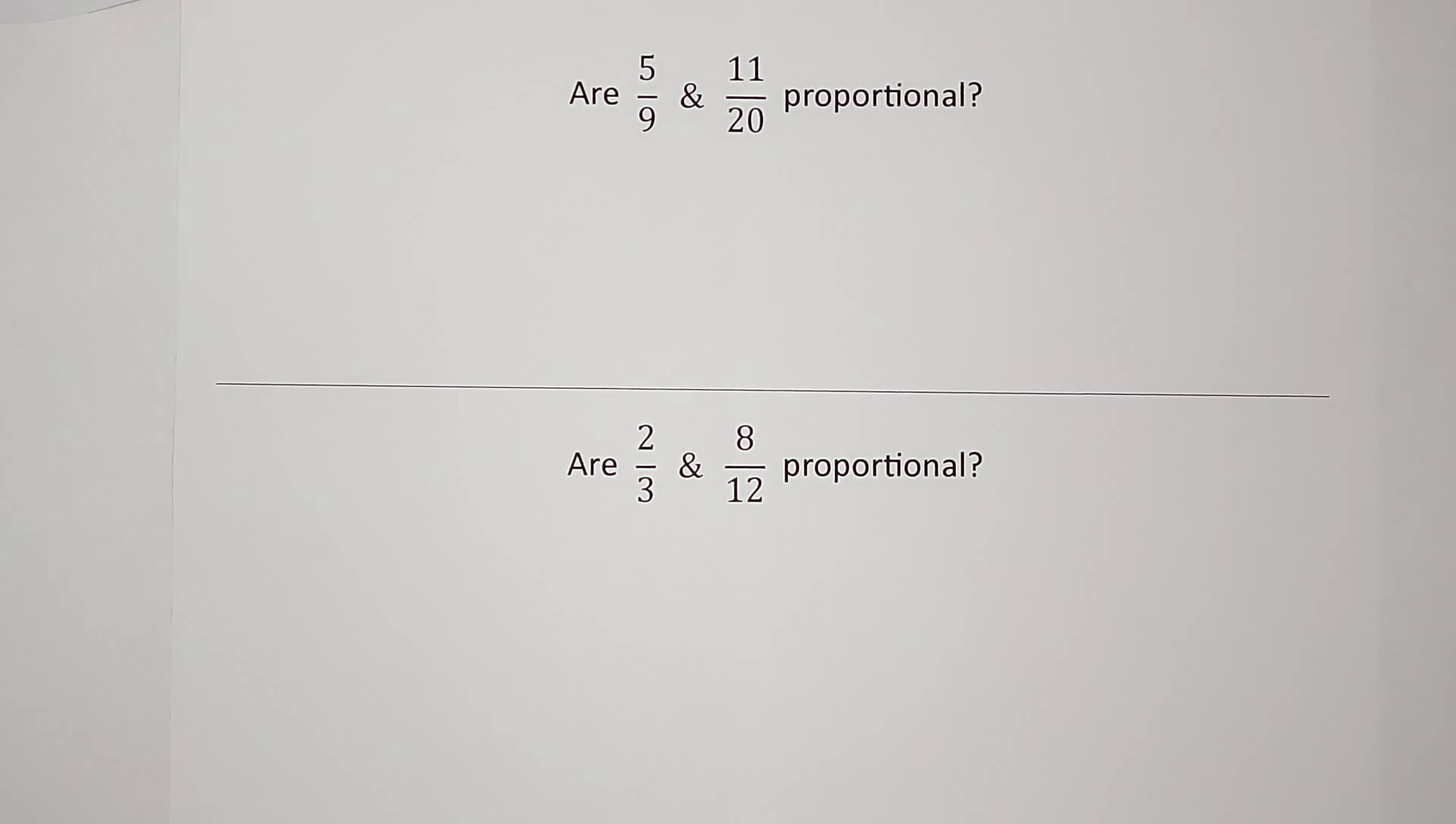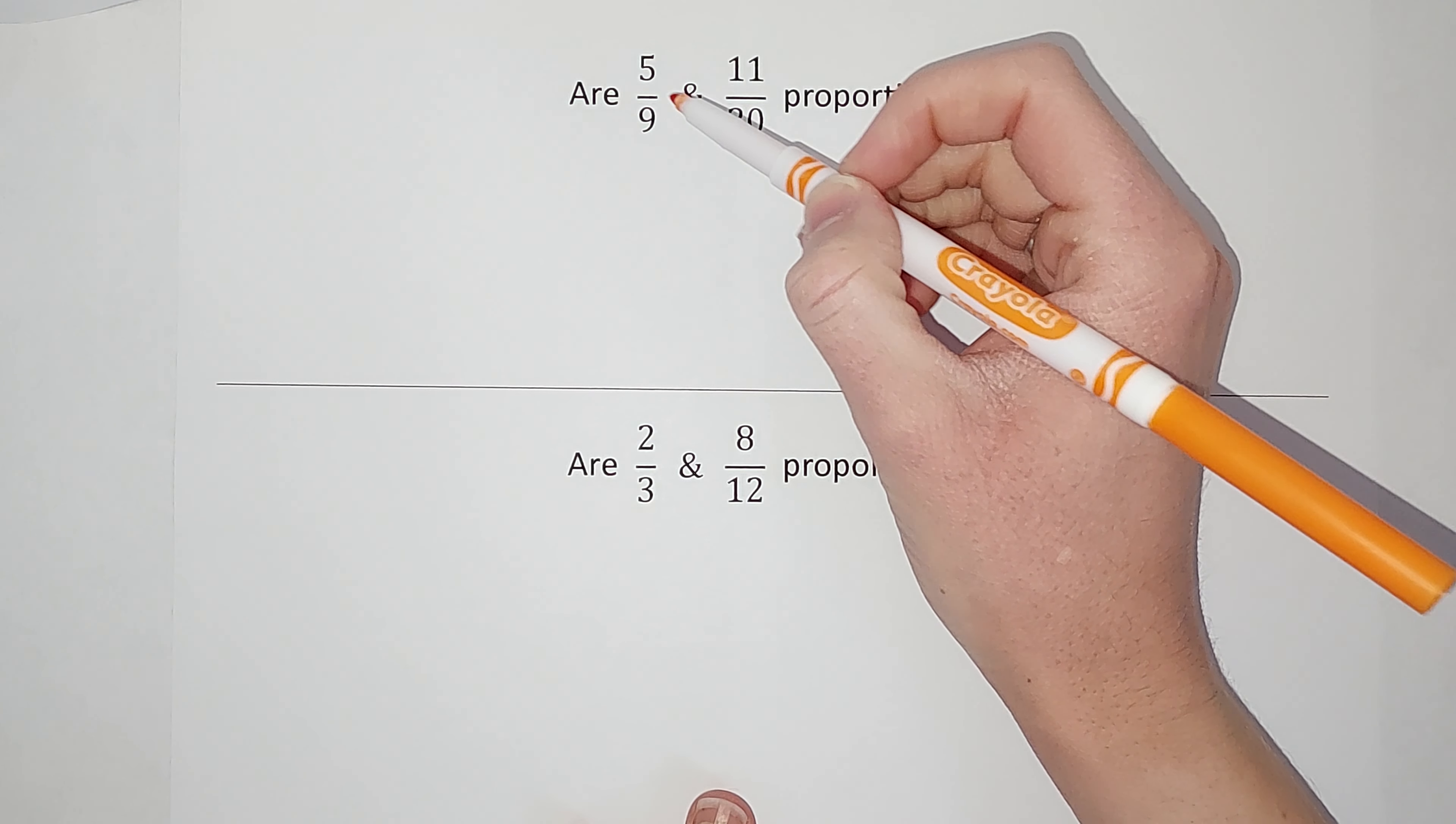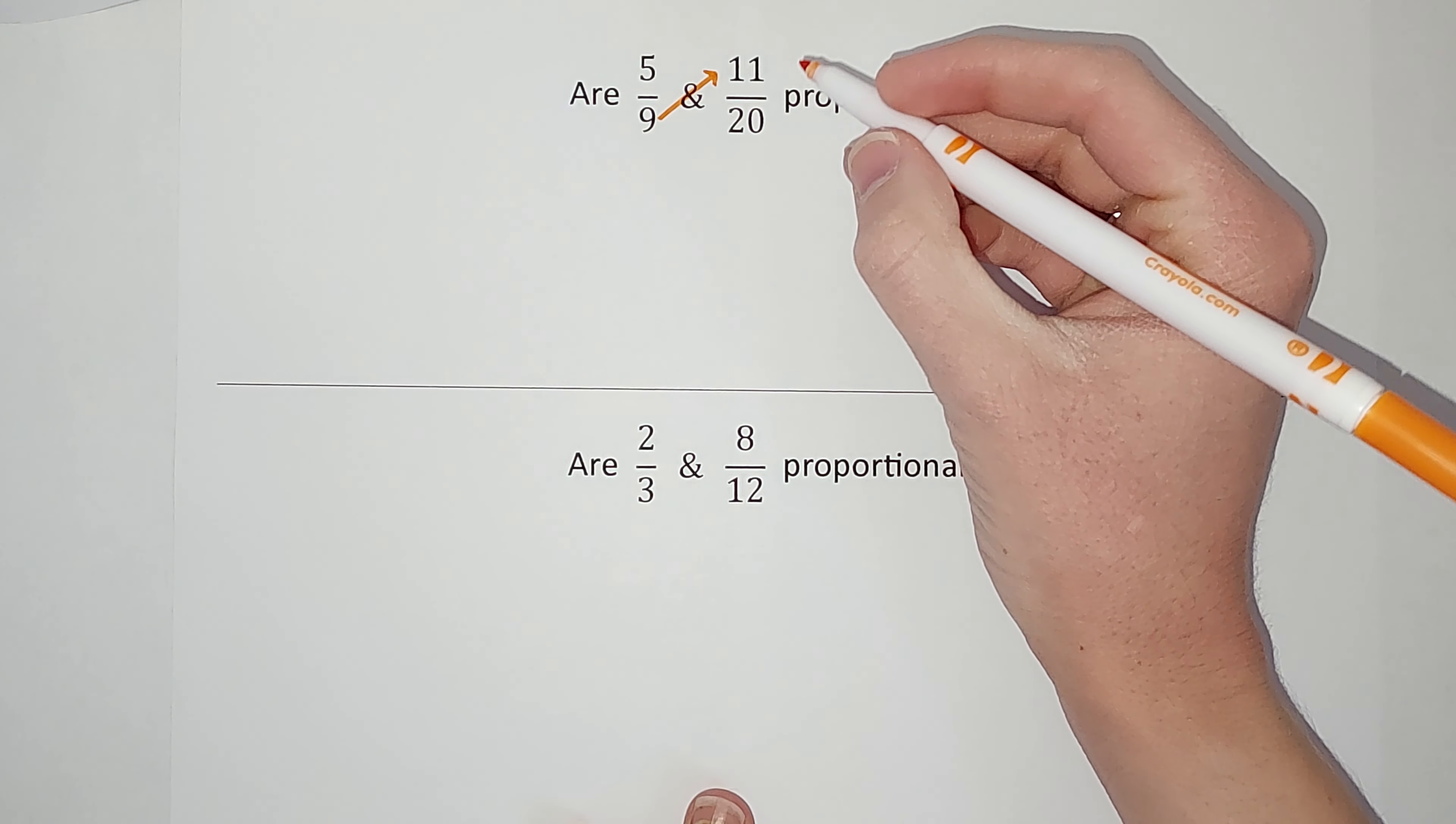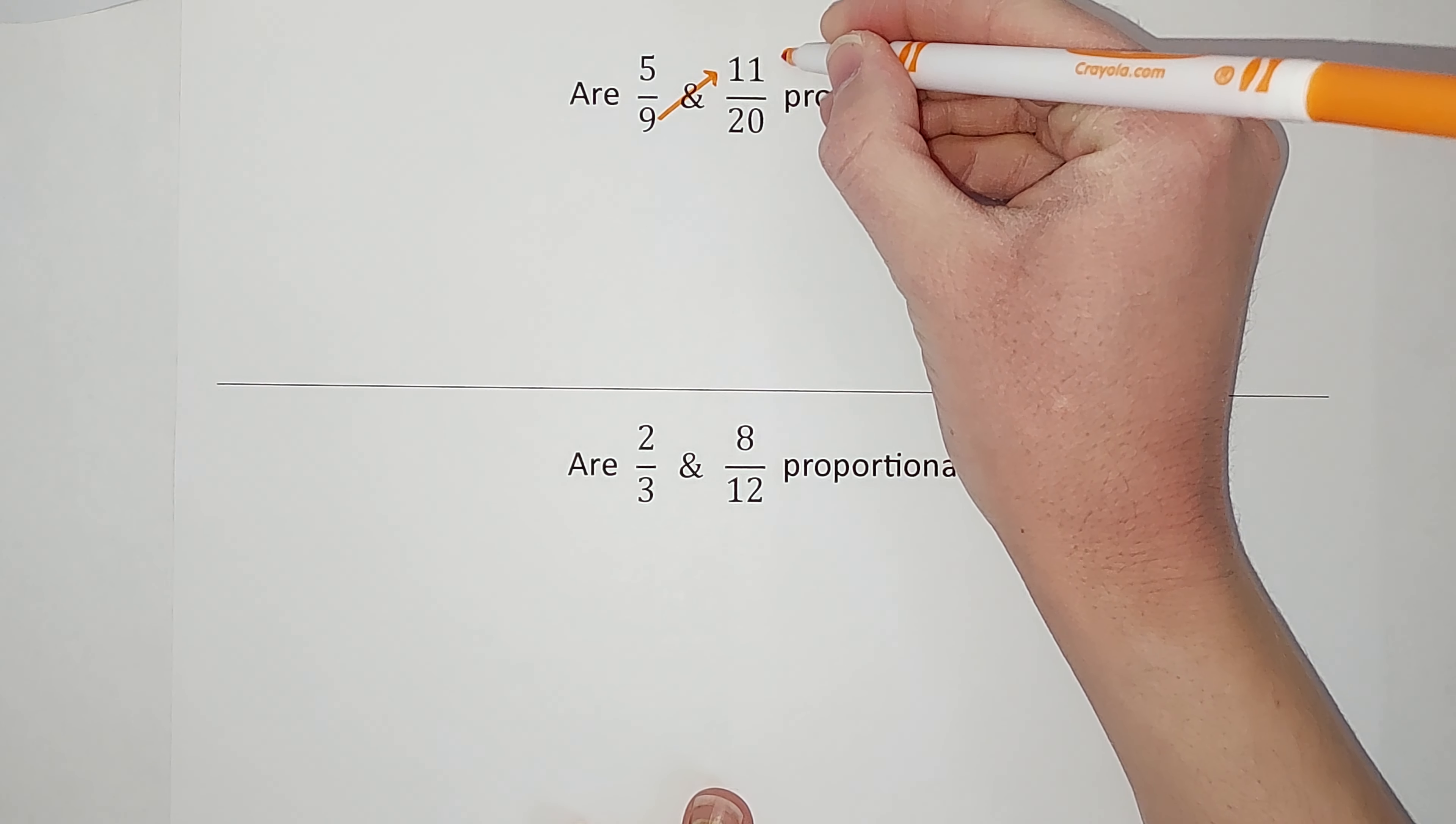Okay, so one way to figure this out is we go from the denominator of one fraction, multiply it to the numerator of the other fraction. So 9 times 11 gives me 99.